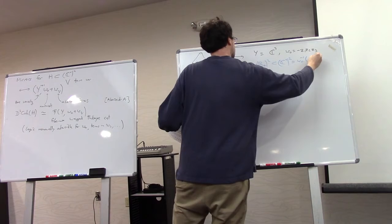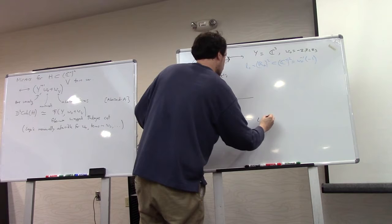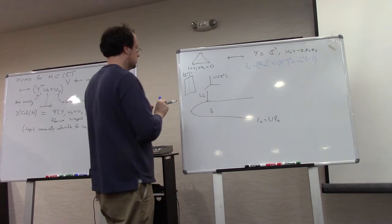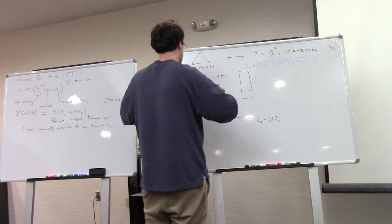so the central fiber is the union of three C squares. The other fibers look like C star squares. And if we take inside C star squared, the Lagrangian little L0 inside the reference fiber and then we parallel transport it along the U-shaped arc.